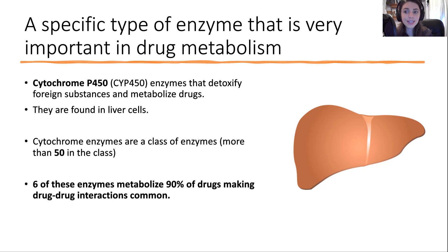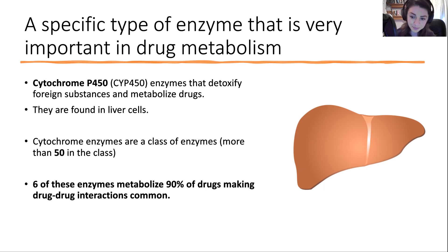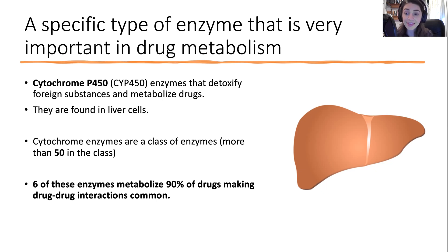This is a class of enzymes, so within the cytochrome P450 family there are about 50 different members, and each of those specific members we call isozymes. You'll see 'cytochrome P450' followed by a series of letters and numbers — that's referring to that specific isozyme. A really fun fact: six of these isozymes in the cytochrome P450 family are responsible for metabolizing 90% of drugs on the market, which is why drug-drug interactions are so common, not just with cannabis but in general.